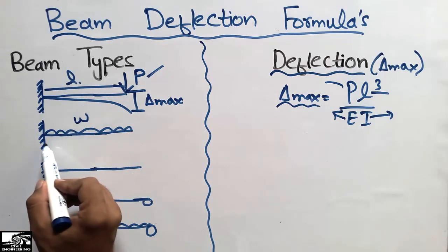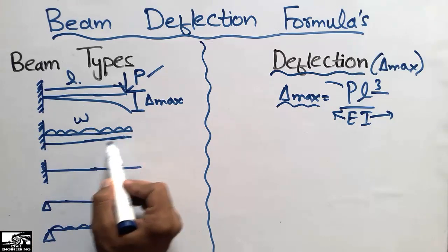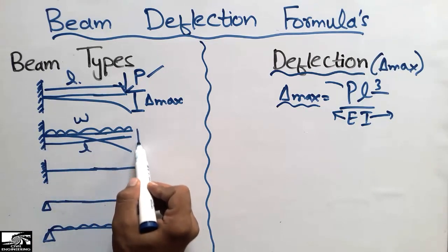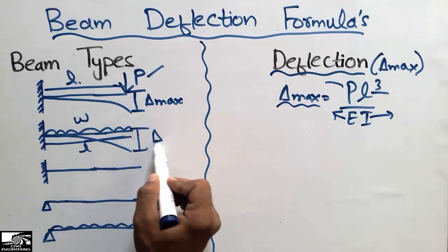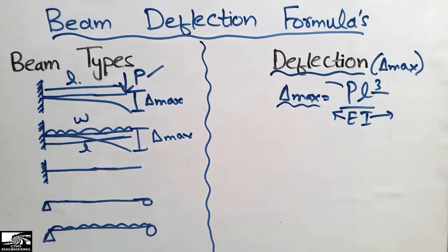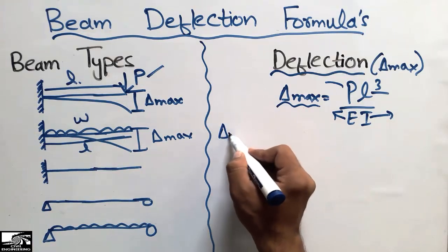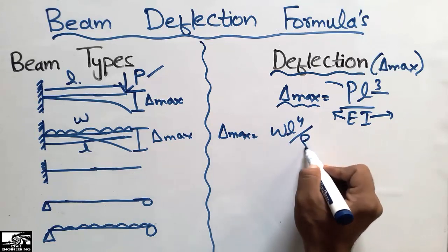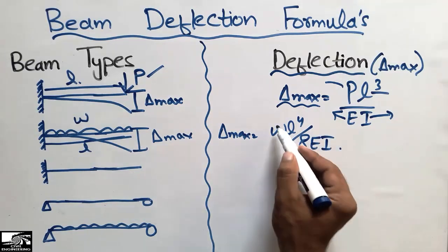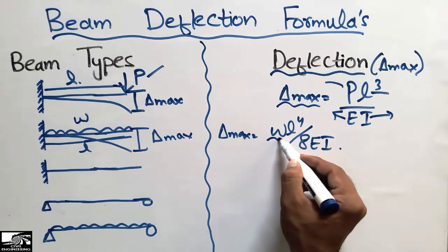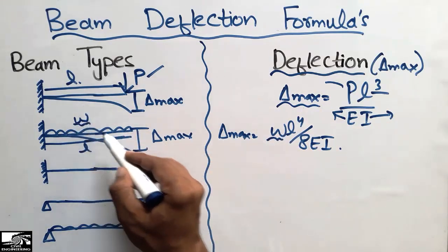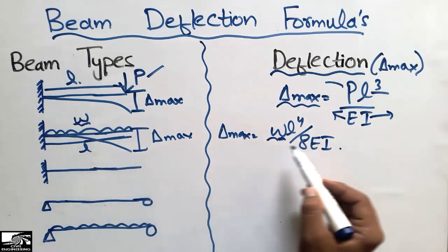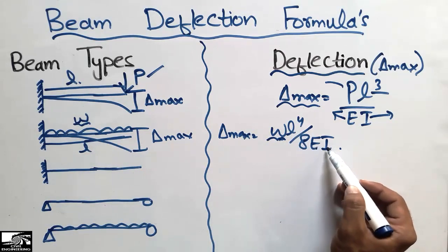The second type is also a cantilever beam but with a uniformly distributed load represented by W, and having length L. Under this loading condition, the cantilever beam will deflect similarly, but the maximum deflection will be different. In this case, the maximum deflection is equal to WL⁴ divided by 8EI, where W is the uniformly distributed load (per meter, per inch, or per foot), L is the length, E is the modulus of elasticity, and I is the moment of inertia.